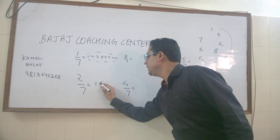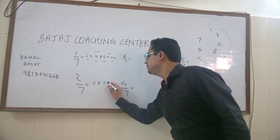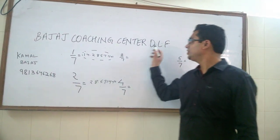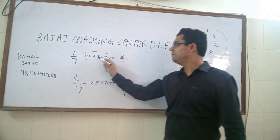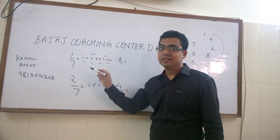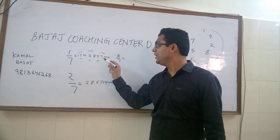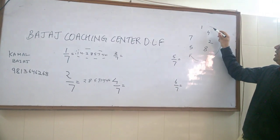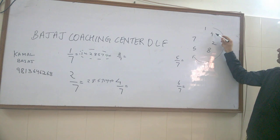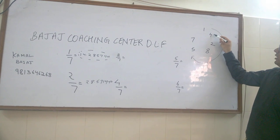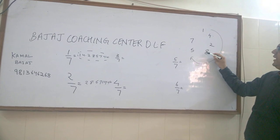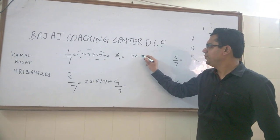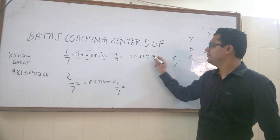Twenty-eight point five seven one four percent. Now think, what should be three by seven? If one by seven is 14 point something, three by seven is 14 into three, which is 42. The fraction which starts from four. Yes, here it is: 42.8571. So three by seven is 42.8571 percent.